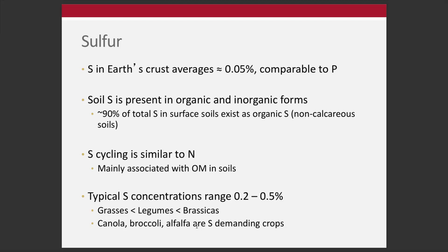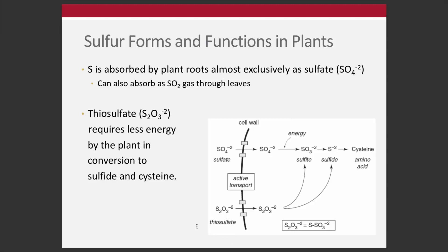When growing sulfur-demanding crops, we need to be especially cognizant of our sulfur levels and sulfur nutrition. Sulfur is absorbed by plant roots almost exclusively as sulfate, SO4 minus. Trace amounts can also be absorbed through gas. There is also thiosulfate, S2O3, as a pathway for uptake. These are different ways that sulfur enters plants and plants acquire sulfur.